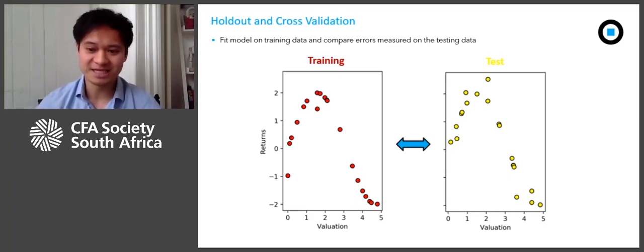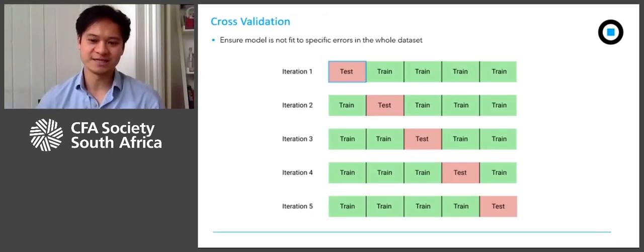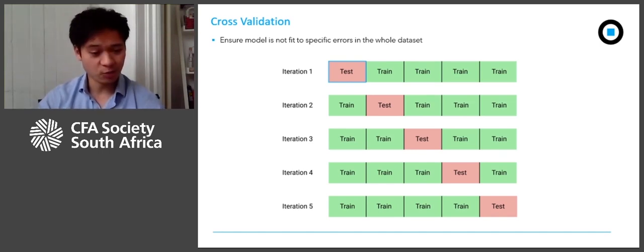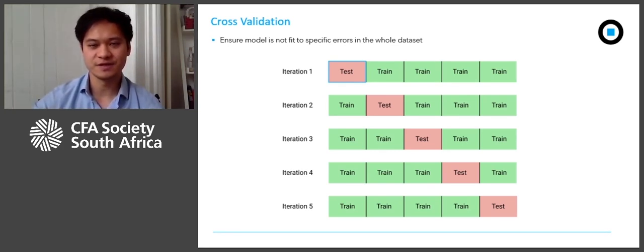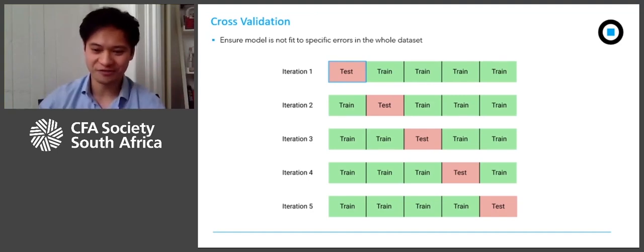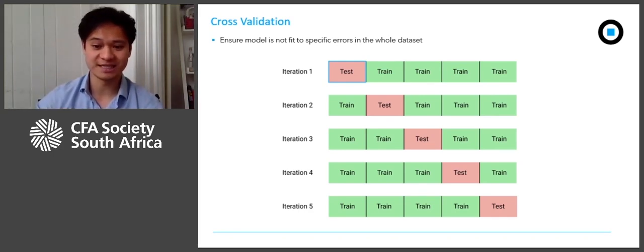This thinking is similar to testing your investment process out of sample — for example, testing whether your strategy works in other countries or asset classes outside of where it was originally developed. There are more elaborate ways of splitting the data, including cross-validation, where you split the data into training and test sets many times in many different ways, and your final model is an average across all these iterations. This reduces the risk of overfitting any one part of the data. You can actually use this method with traditional statistics — in portfolio construction, naively using a sample covariance or correlation matrix as an estimate is essentially overfitting to the time period over which you've calculated those covariances. Cross-validation when estimating your covariance matrix can make it more applicable on a forward-looking basis.